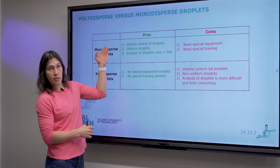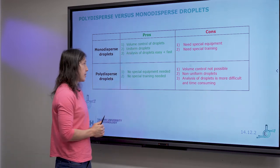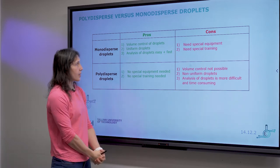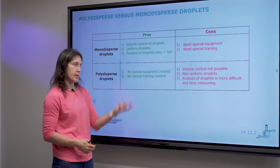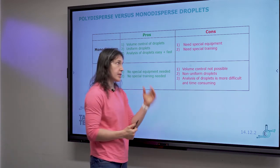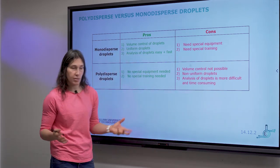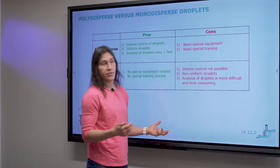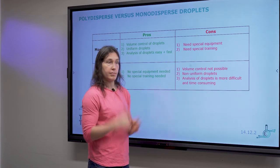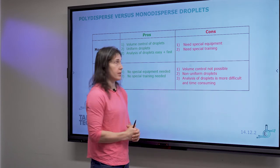With monodispersed droplets made with the chip, you have nice volume control, which enables you to make uniform droplets. This also makes the analysis of your droplets much easier and much faster later on. The con is that you do need special equipment — some kind of chip, some kind of external pressure source such as syringes or pumps. You also need someone who knows how to do this, so some training of personnel is required.